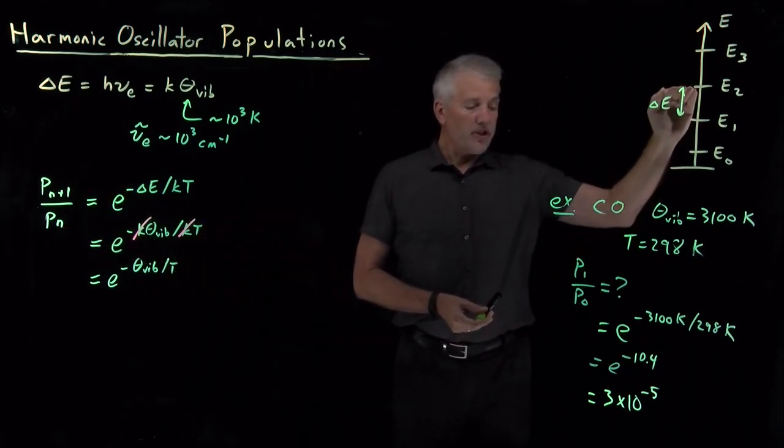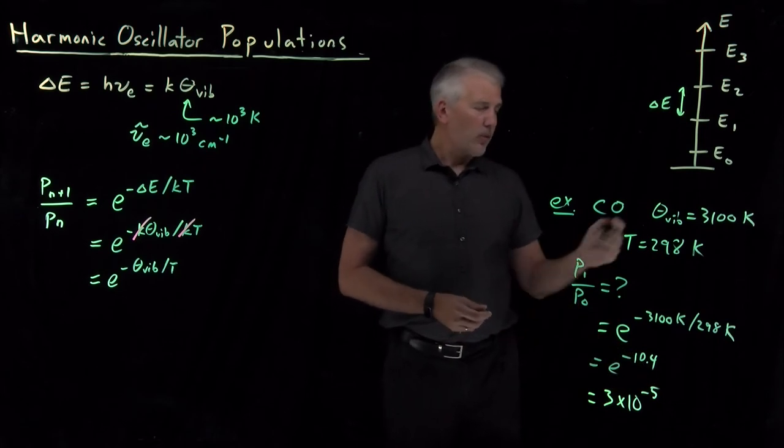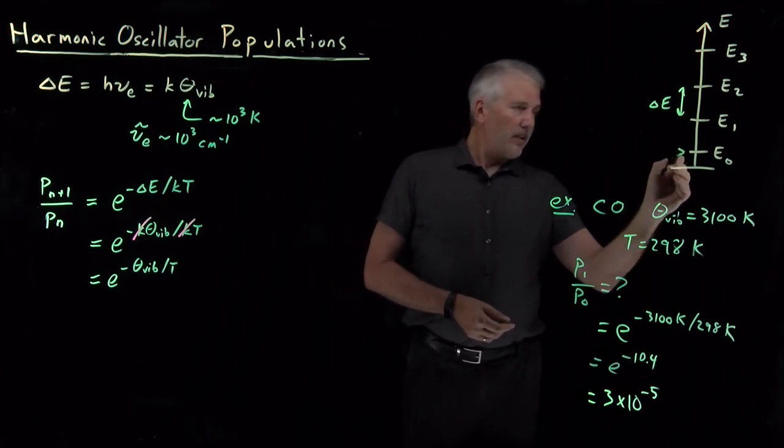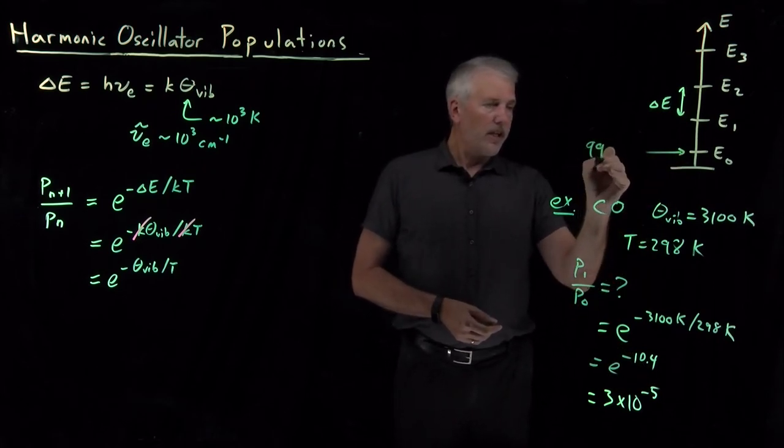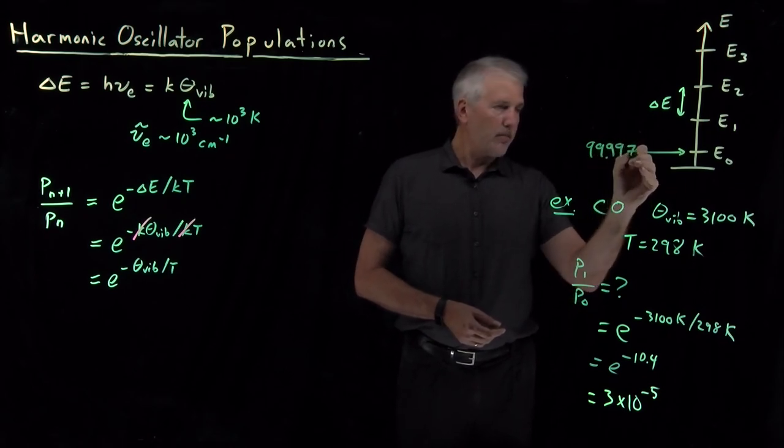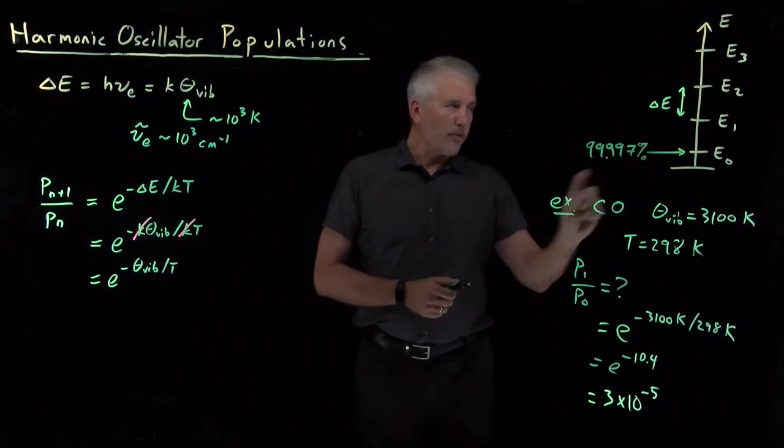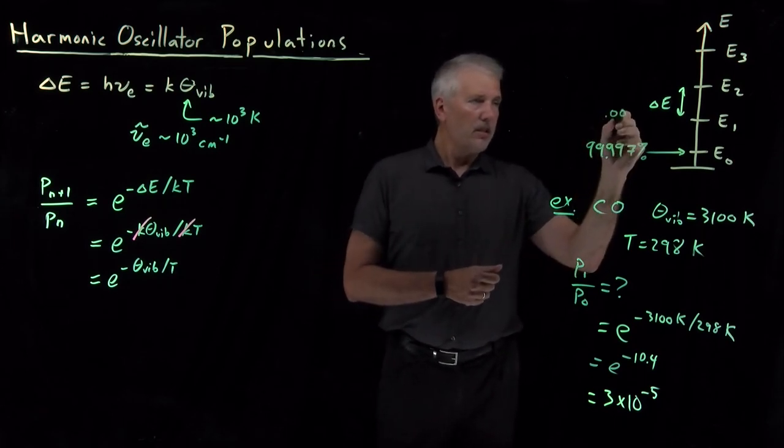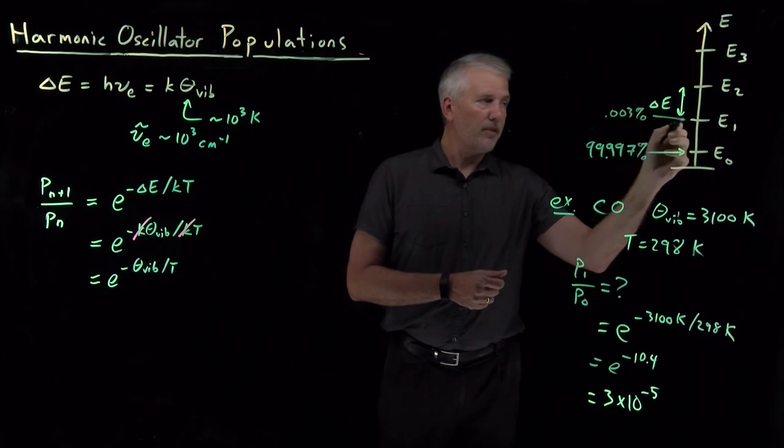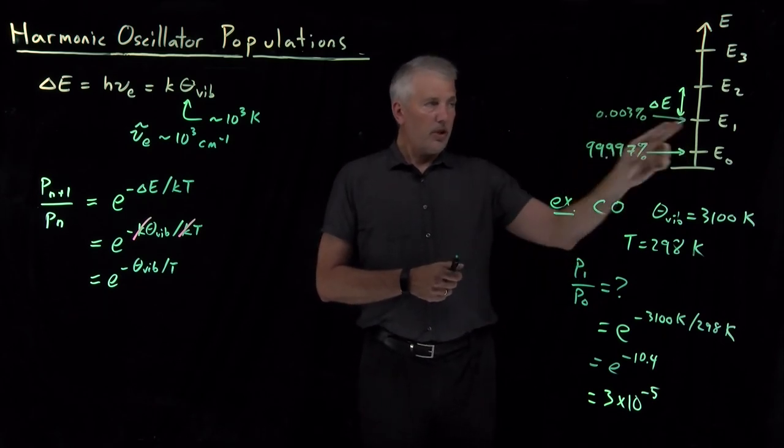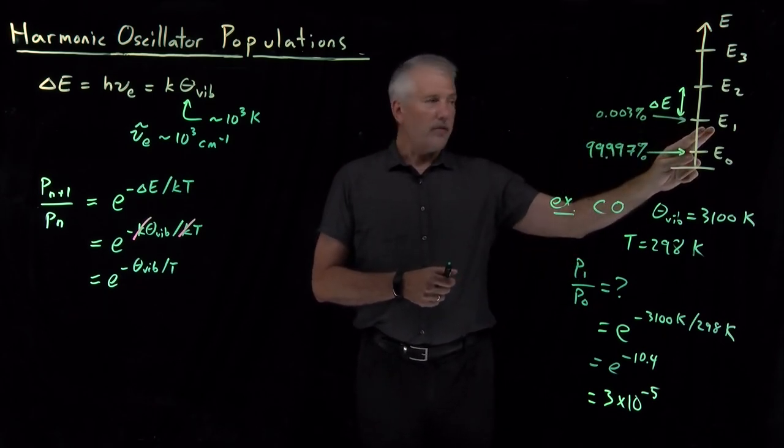Every state I go up, the population drops by this factor. So what that means is in the ground state, something like 99.997% of the molecules live in the ground state. Only 0.003%, 3 times 10 to the minus 5 or so, occupy the energy level 1.